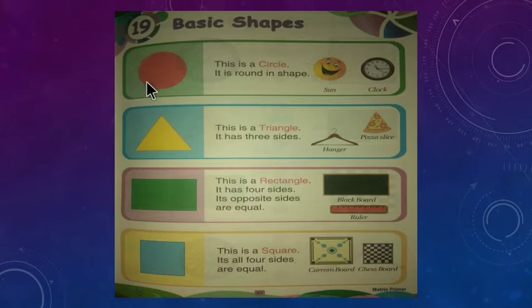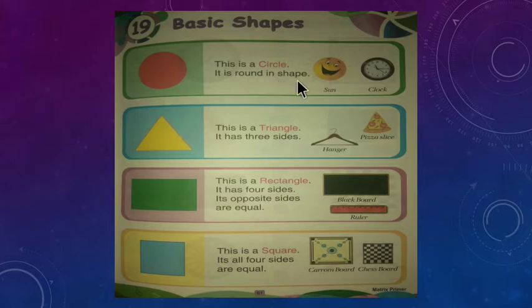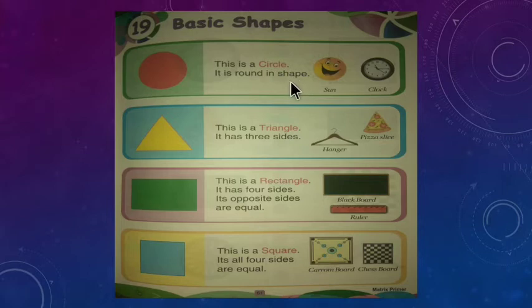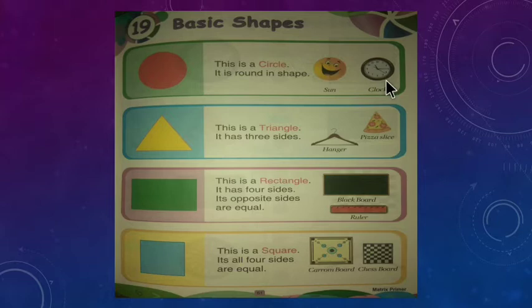Do you know which shape is it? This is a circle, and it is round in shape. This is a circle — it is round, not straight. You can see more examples: the sun also has a round shape, and a clock also has a round shape.